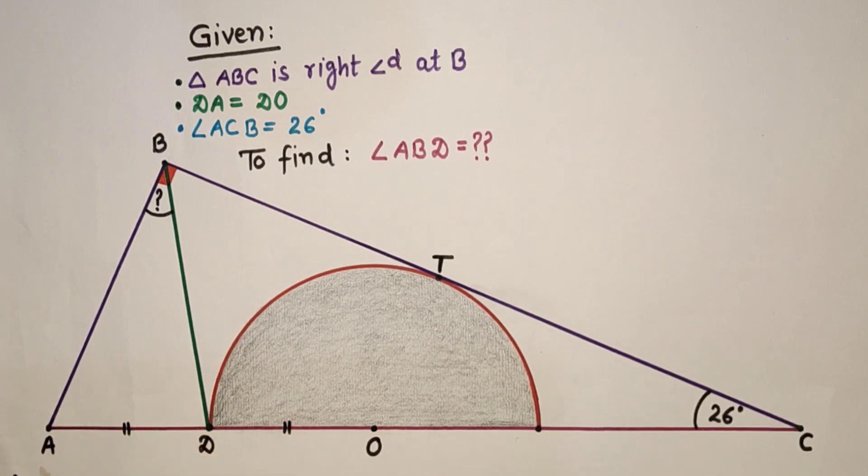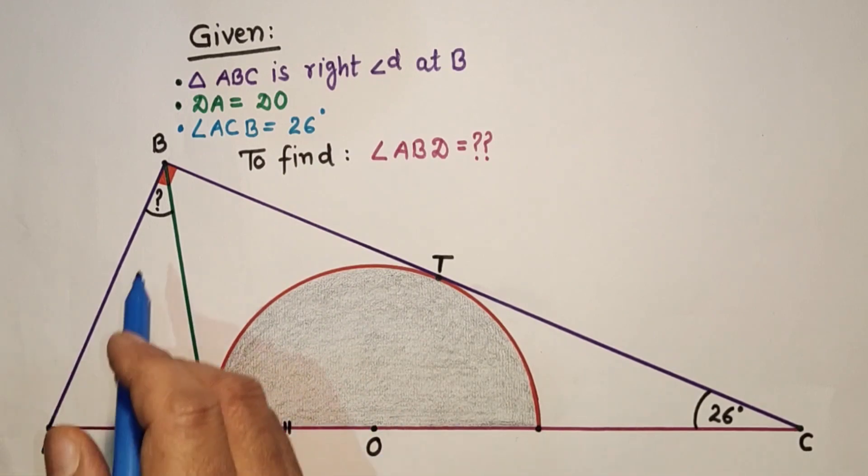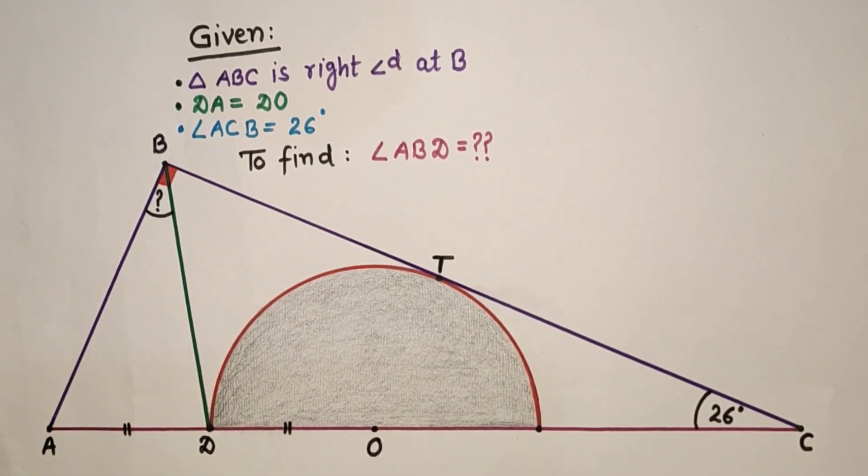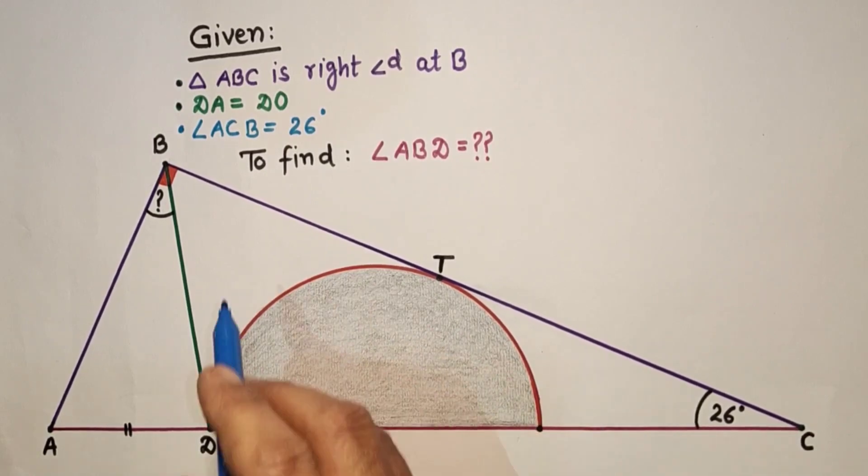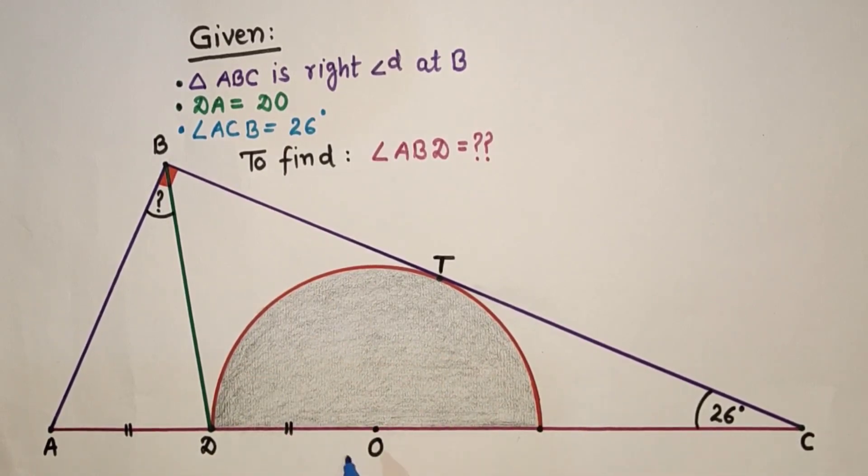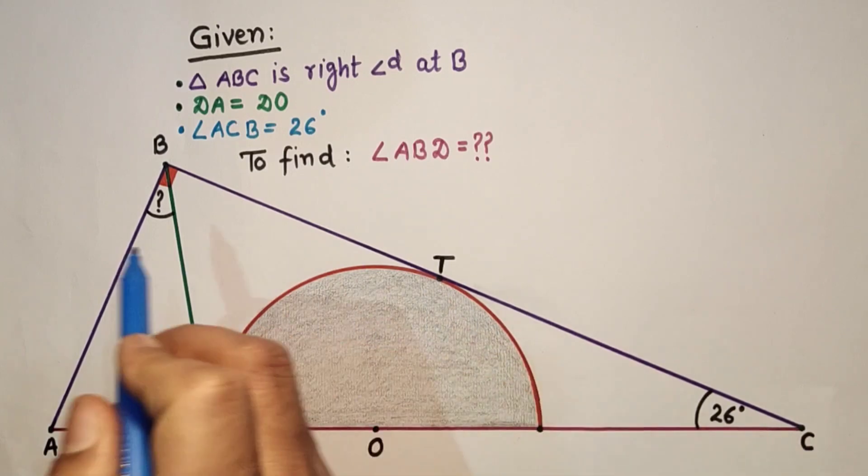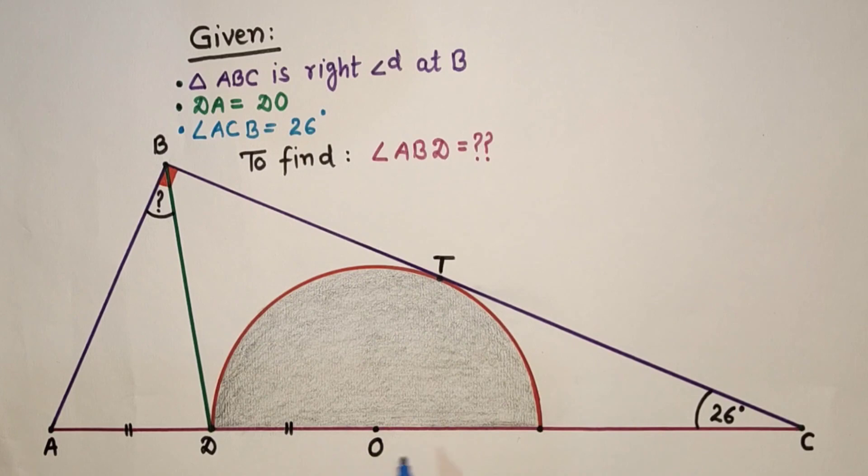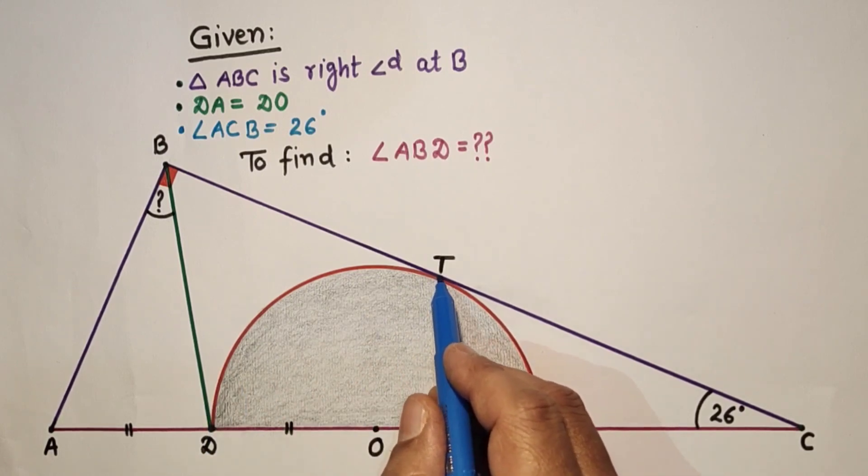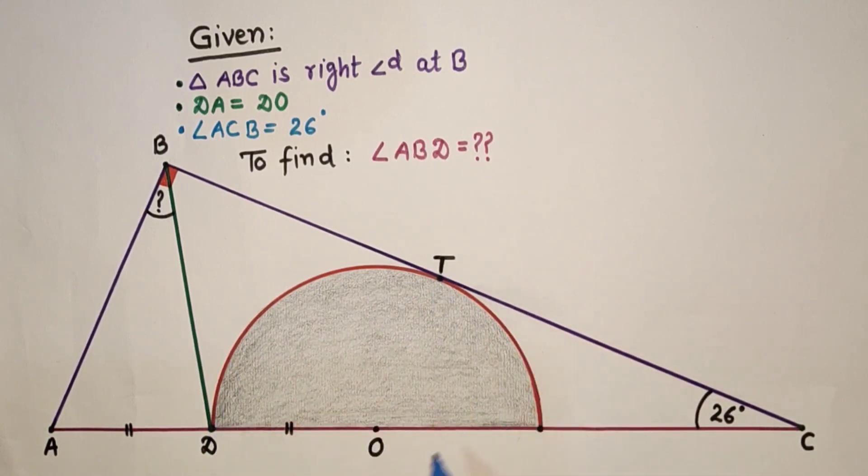Here triangle ABC is a right angle triangle. And angle ACB is 26 degrees. O is the center of this semicircle. This side CB is tangent and touches this semicircle at point T. This is the center of the semicircle.